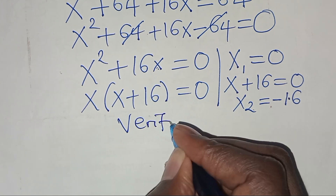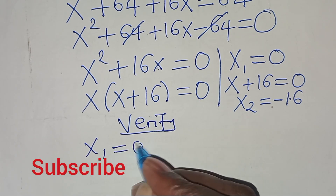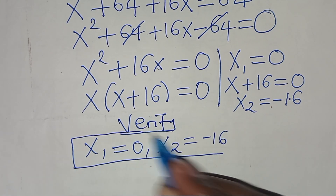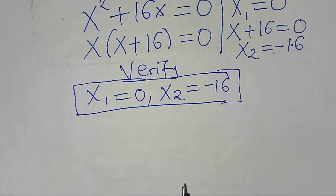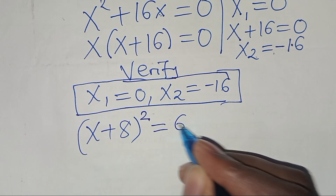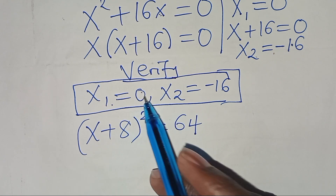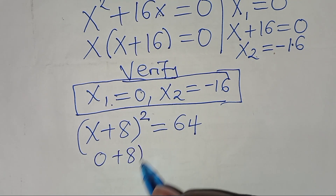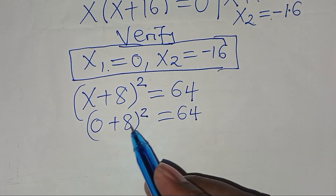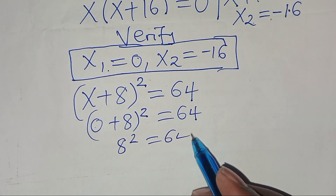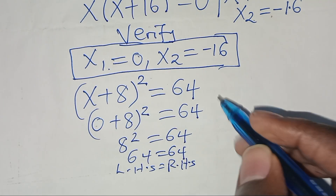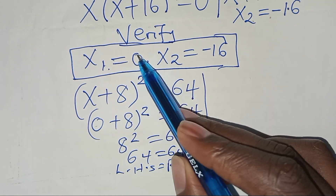Let's verify that these two values of x actually satisfy the equation. Recall that x plus 8 squared should give a value of 64. Substituting x1 equal to 0: 0 plus 8 squared equals 8 squared, which is 64. So 64 equals 64 — the left-hand side equals the right-hand side, confirming x1 equal to 0 satisfies the equation.